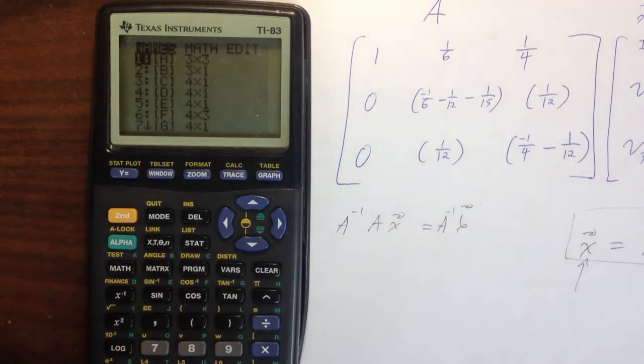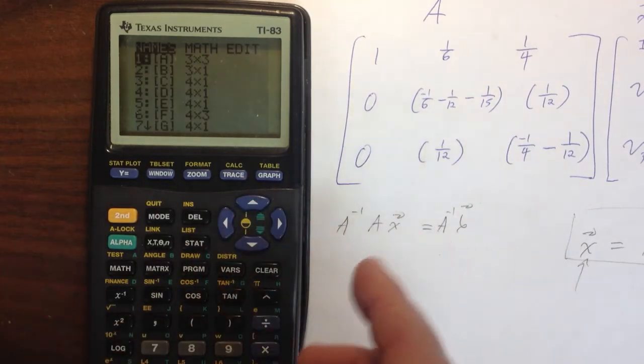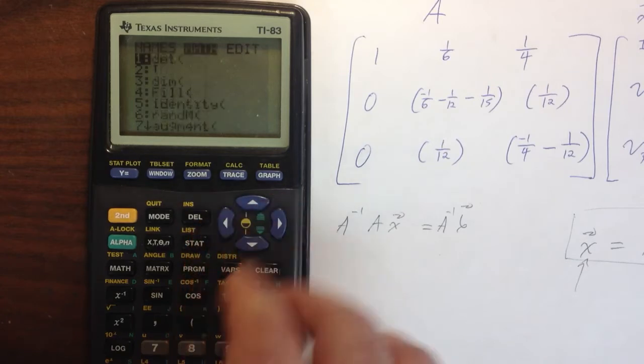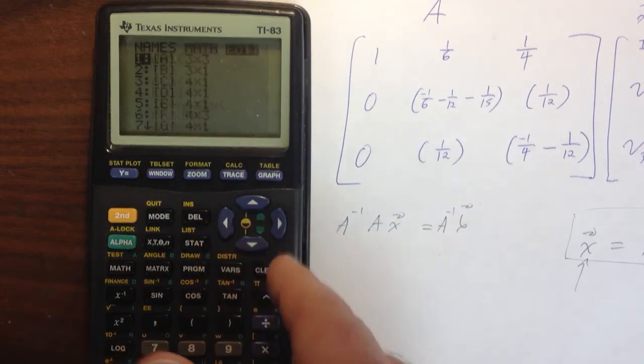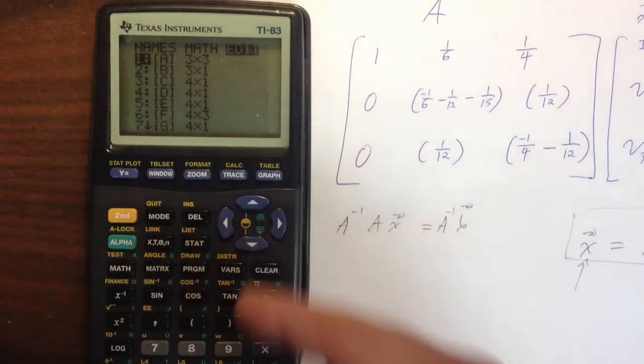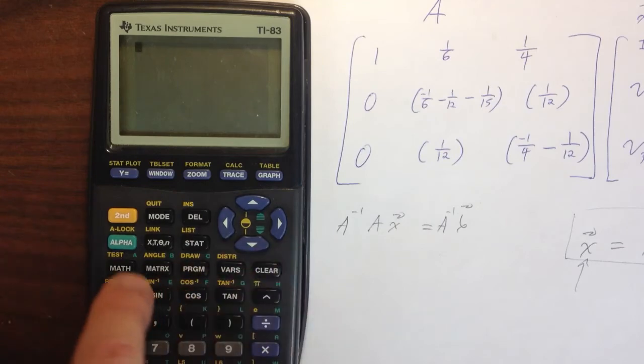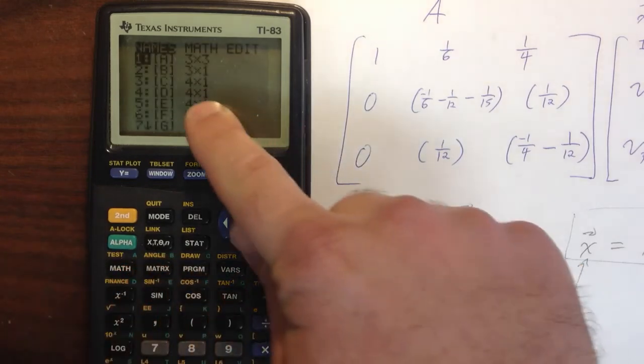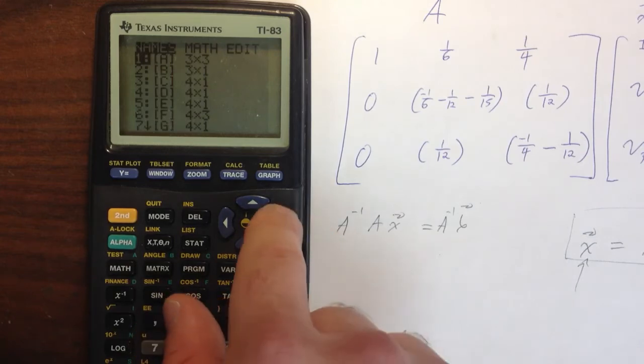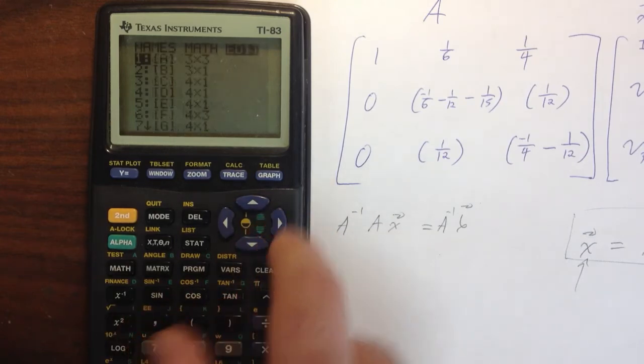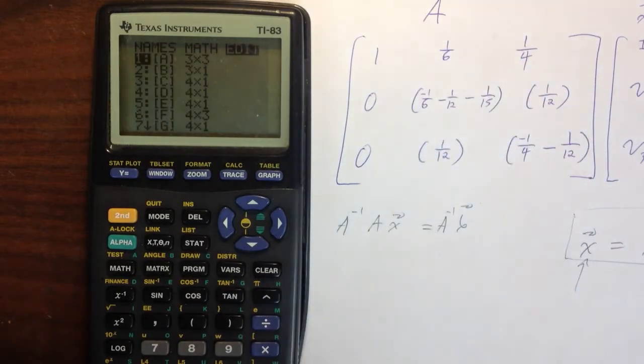I'm going to go ahead and hit my matrix button. This is the menu I get. I can select a bunch of matrices that are already input, select from a bunch of different math operations on those matrices, or I can go and edit those matrices. When I start out, let me second quit out of this. I'm going to hit the matrix button again. I start on the names column. I'm going to go over to the right two clicks, that's one, two, to the edit column. I want to edit matrix A because I want to put this information in there.